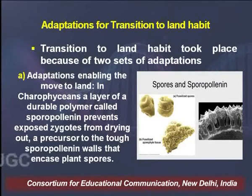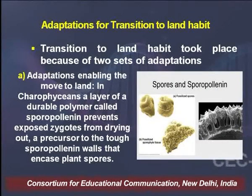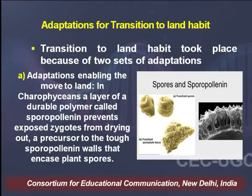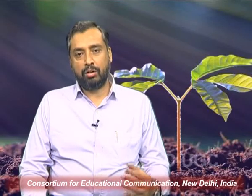The second type of adaptations are derived ones — those terrestrial adaptations which took place once the plant ventured outside the aquatic habitat. Talking about those adaptations which enabled the movement of plants towards terrestrial habitat, in carophysians a layer of durable polymer called sporopolinin prevents the exposed zygote from drying out. It is a precursor to the tough sporopolinin wall that encases plant spores, allowing them to gradually move from aquatic habitat towards land.